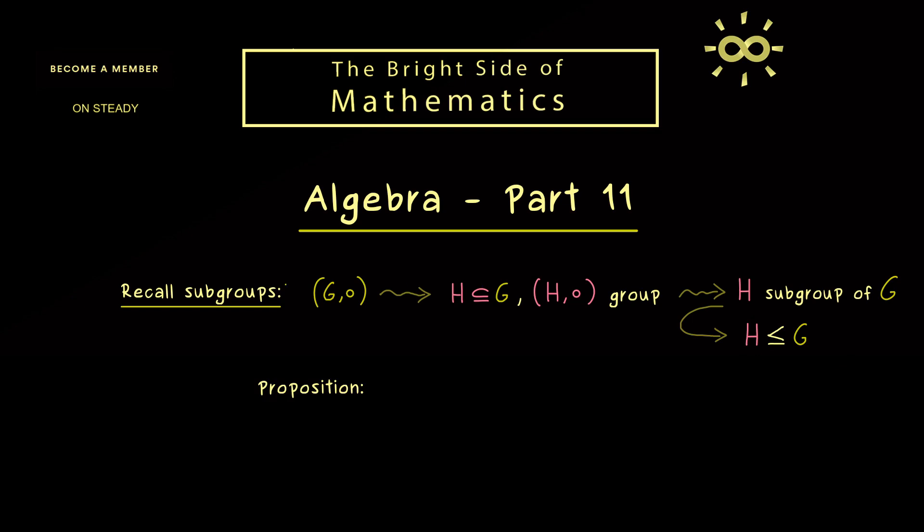Moreover, please also recall that we have learned in the last video what we have to check for a subgroup. Indeed, for any non-empty subset H in G, we have the equivalence that H is a subgroup of G if and only if two conditions are satisfied.